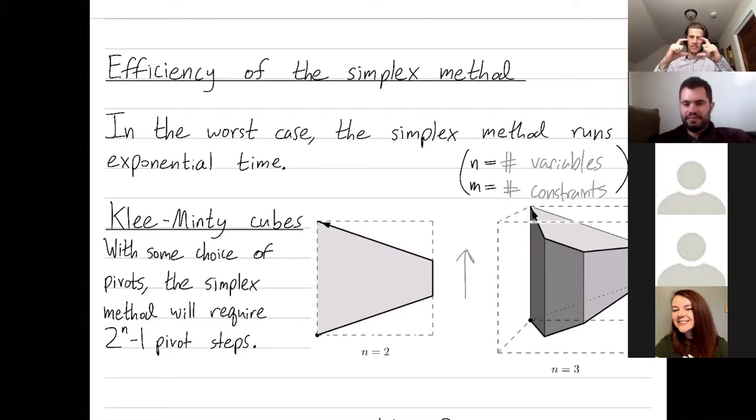And then pretend our feasible region is the square in 2D, but I deform it to look like this trapezoid here. Notice you could take one step and solve the optimization problem. Starting at the bottom left, take one step to the optimal vertex at the top. But there are also pivot rules where you improve a little bit, improve a little bit, and improve a little bit, and you traverse and you visit every single vertex. In total, these cubes have an exponential number of vertices, 2^n vertices, where n is your dimension or number of variables. So for some poor choice of pivot rules, you could take an exponential number of steps.